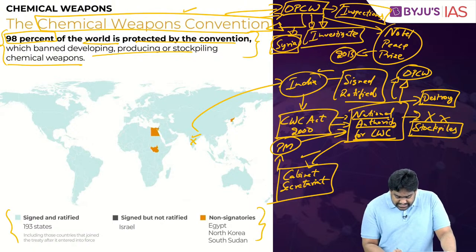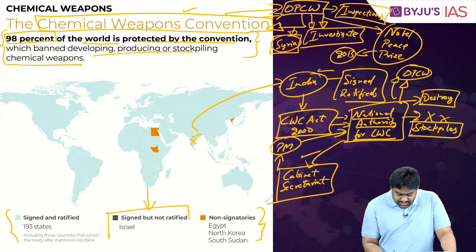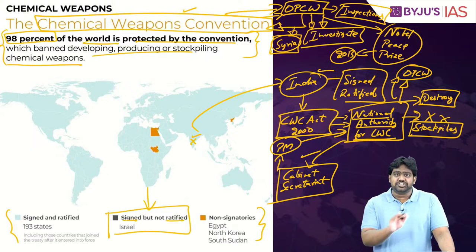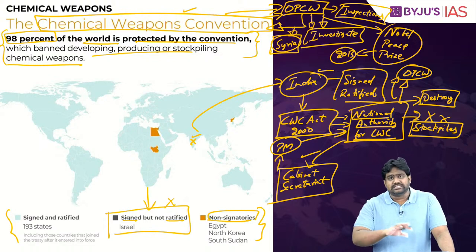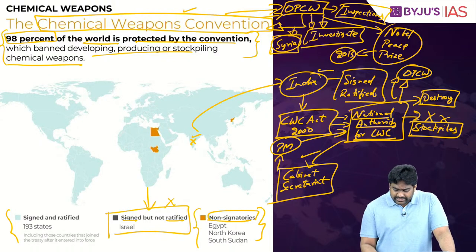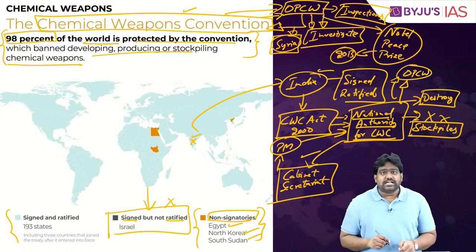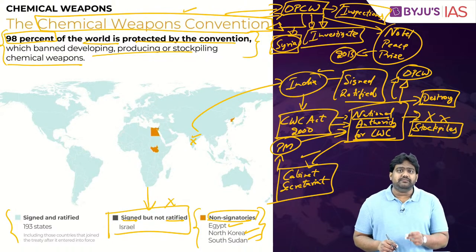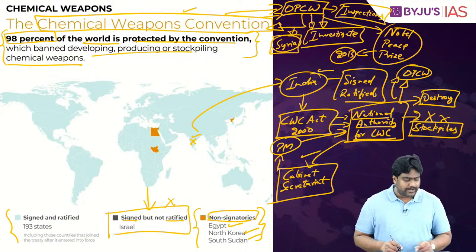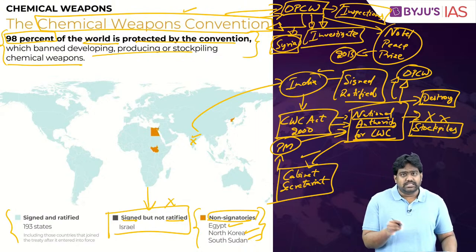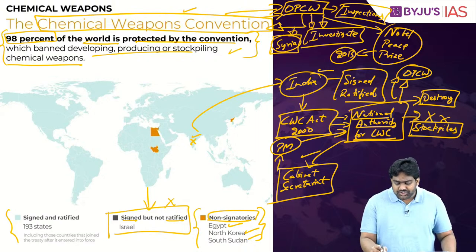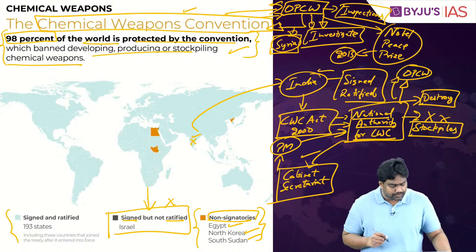Countries outside the convention include Israel, which has signed but not ratified it, and non-signatories — Egypt, North Korea, and South Sudan — which have neither signed nor ratified it. Such important points are very relevant for prelims, especially since this topic has been in news in the last one year.